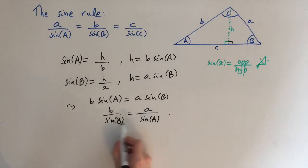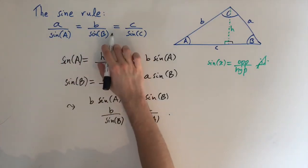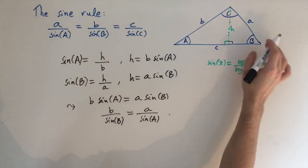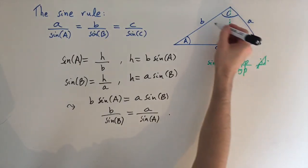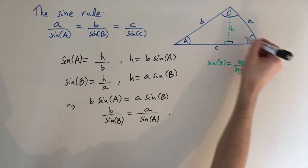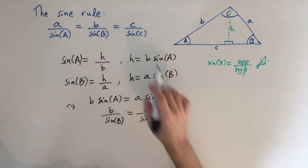And this is exactly the sine rule, so we just showed this first equality. But the second one follows just by relabeling all the points, so I'm not going to do it here, but if you just draw the vertical line in a different vertex, then you can show this equality as well, but it's the same strategy essentially.